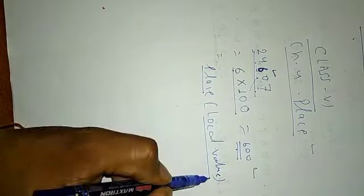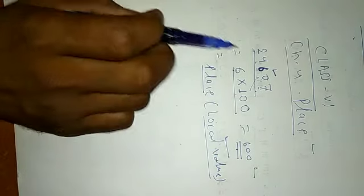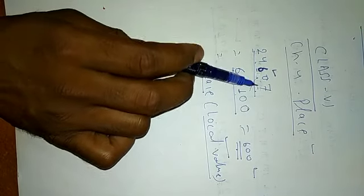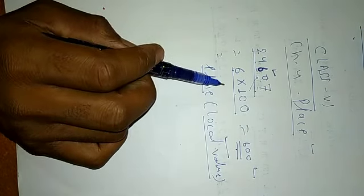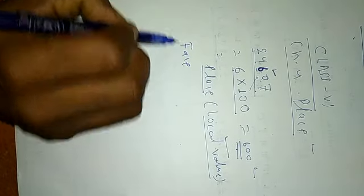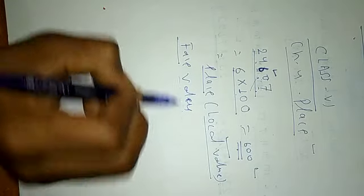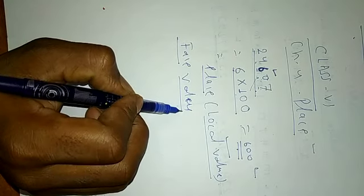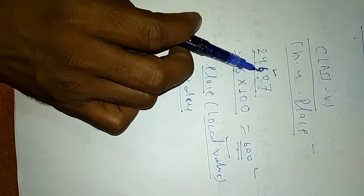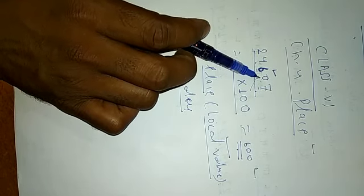Place value is also called local value. The face value of any digit is the digit itself. Face value of 2 is 2, face value of 4 is 4, face value of 6 is 6, face value of 0 is 0.